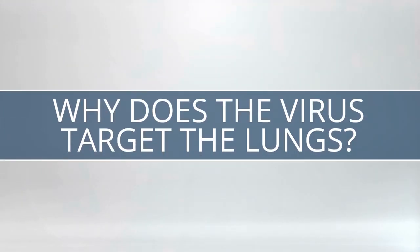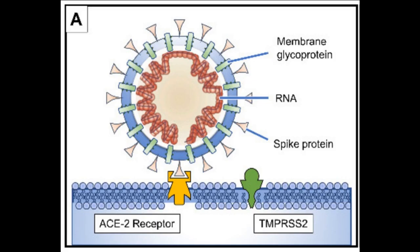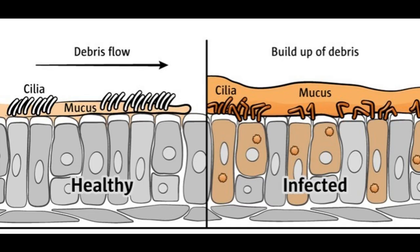Why does the virus target the lungs? The virus is actually really picky as to which cells it targets, since they must both have the ACE2 receptor and the TMPRSS2 enzyme. There are only a few of these cell types in the body, and one place they live is in the respiratory tract. These cells usually have hair-like projections called cilia, that typically have the job of sweeping mucus and bacteria out of the lungs. When the virus enters these cells, the cilia can no longer function correctly and a buildup of debris and fluid occurs.